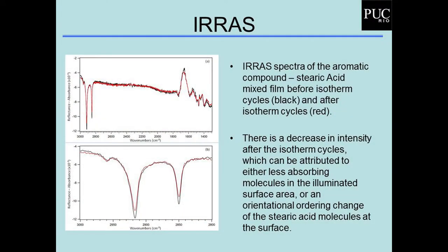Se a gente fizer o infravermelho da parte comprimida com a barreira aberta e comprimida, vê-se uma diferença na banda CH₂. Essa diferença é pequena porque estamos olhando apenas um ciclo, mas mesmo assim já conseguimos ver uma diferença na organização, porque a banda CH₂ fala diretamente sobre a organização das cadeias hidrocarbônicas.